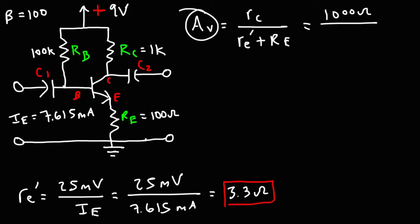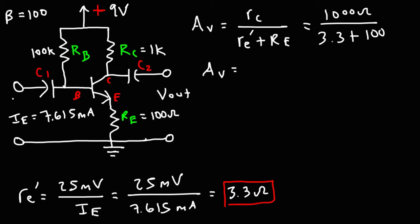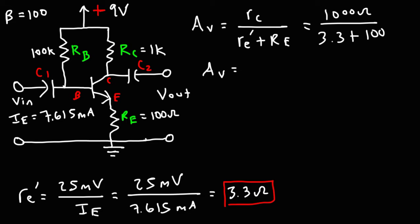Now we can calculate the voltage gain. The AC emitter resistance is 3.3 ohms, and RE is 100 ohms. The voltage gain is the ratio between the output voltage and the input voltage, and that's going to be 1,000 divided by 103.3, which rounds to 9.7. So that's the voltage gain of this particular circuit.